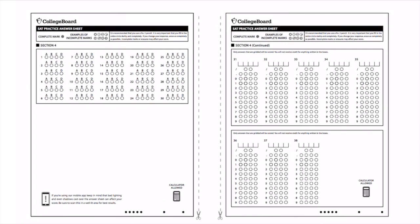This is the answer sheet for section 4 of the SAT. If you look here, the first 30 are all multiple choice — A, B, C, D. Number 1 would be the easiest question and number 30 would be the most difficult question.